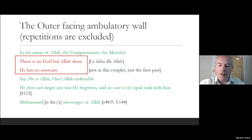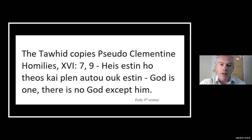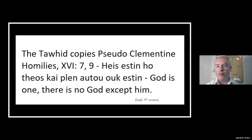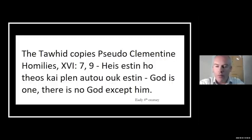It's similar to the idea that when you're trying to identify who you are, sometimes it's easier to say who you are different from. They're distinguishing themselves from the Christians by saying 'we're against this, we're against that.' If we investigate where the Shahada came from, what I found is that the Tawhid copies pseudo-Clementine Homilies in Book 16, chapters 7 and 9 - meaning 'God is one, there is no God except him' - from the early 4th century. This is clearly plucked from that source. This is a formula that precedes both the Dome of the Rock and the Quran by 300 years.